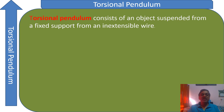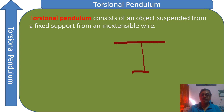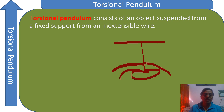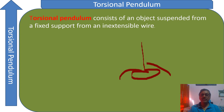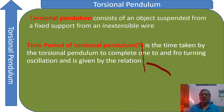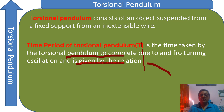The torsional pendulum consists of an object suspended from a fixed support with an inextensible wire. There is a support, from which a wire hangs, and from the wire an object is suspended. This object is twisted by a certain angle. When it performs to-and-fro motion on both sides, it is called a torsional pendulum. The time period of this pendulum is the time taken by the pendulum to complete one complete to-and-fro turning from the fixed point or axis of rotation.